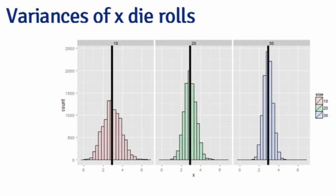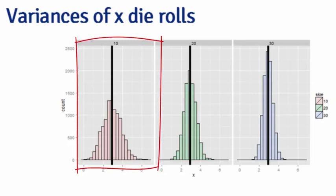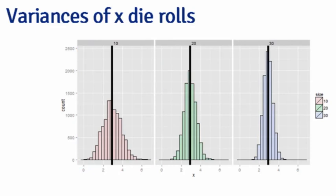I would have to do it a lot, but fortunately on the computer I can do it thousands of times, which is what I did right here. And notice that the distribution of the variance of 10 die rolls is exactly centered around 2.92, the variance of the population of a single die roll.